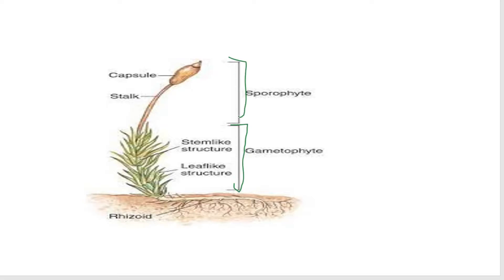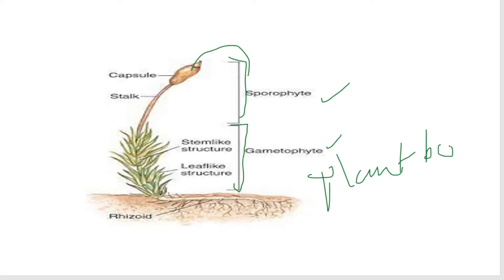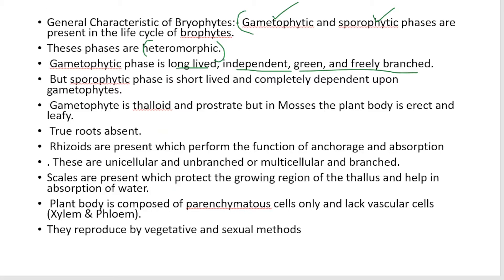The plant body consists of gametophyte and sporophyte. The sporophyte is dependent on the gametophyte. The gametophytic phase is long-lived, independent, green, and freely branched. The sporophytic phase is short-lived and completely dependent on the gametophyte.